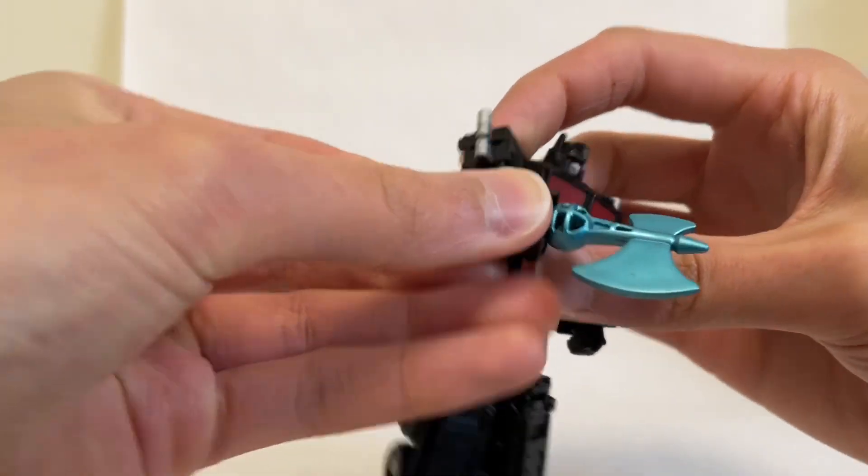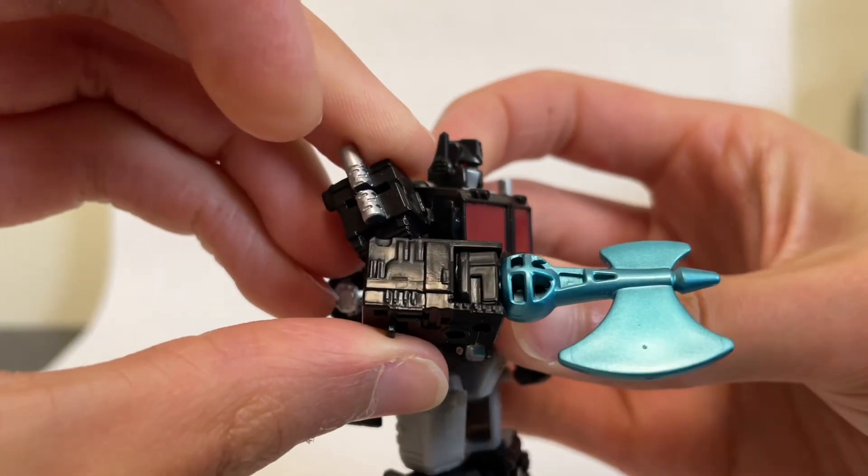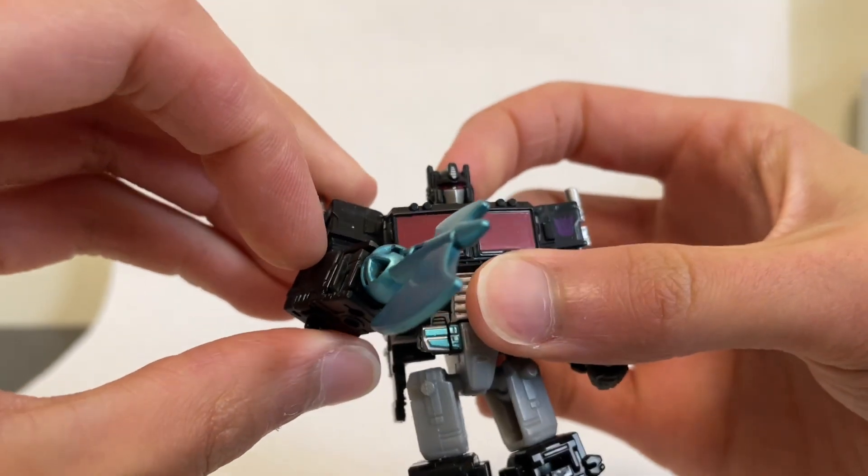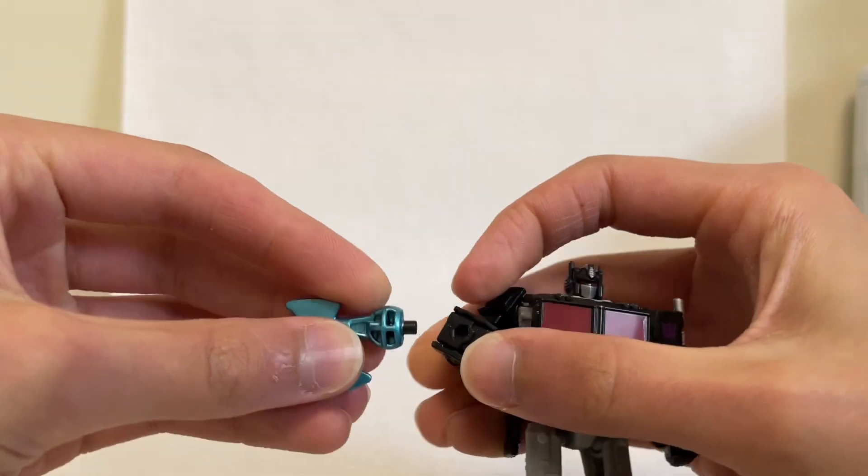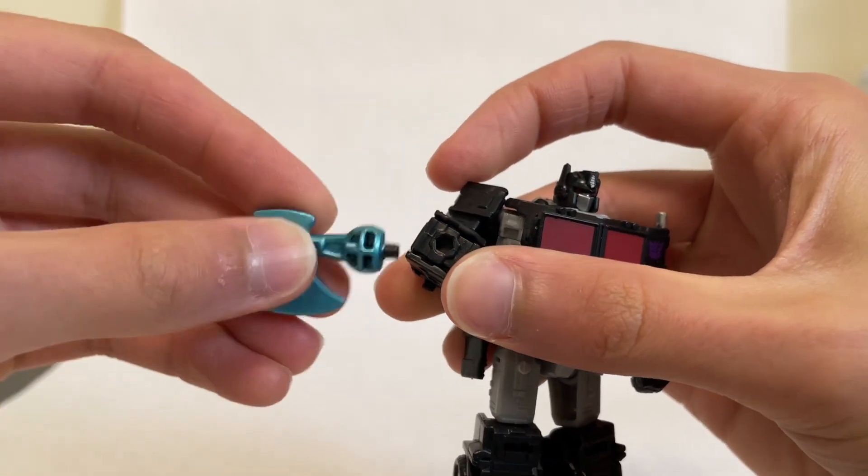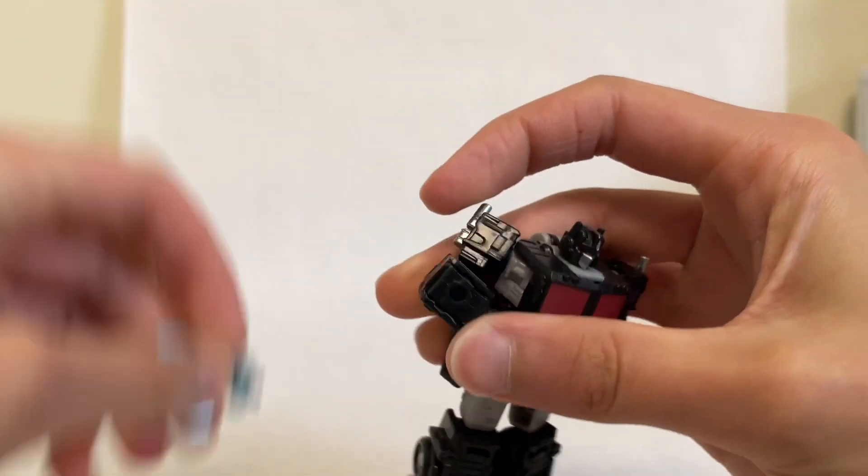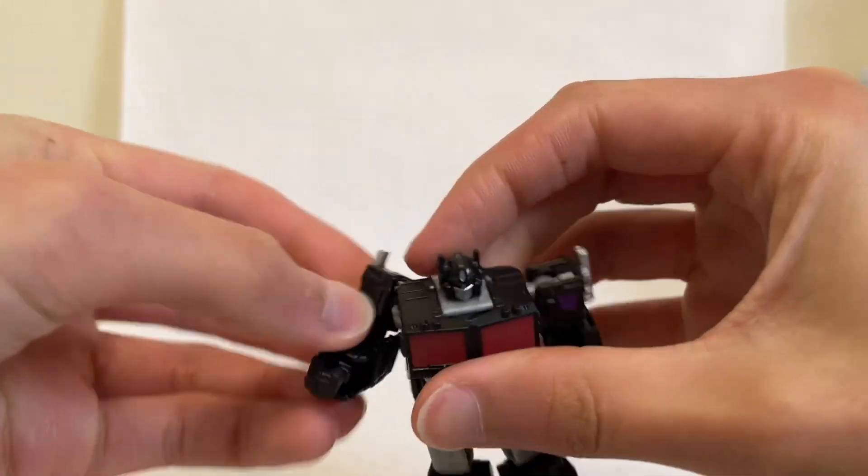You can see his Energon Axe here. Looks great. Nice shiny blue matching his waist. And it does just tab in, port in via the three millimeter port on the back of his hand there. So very neat.